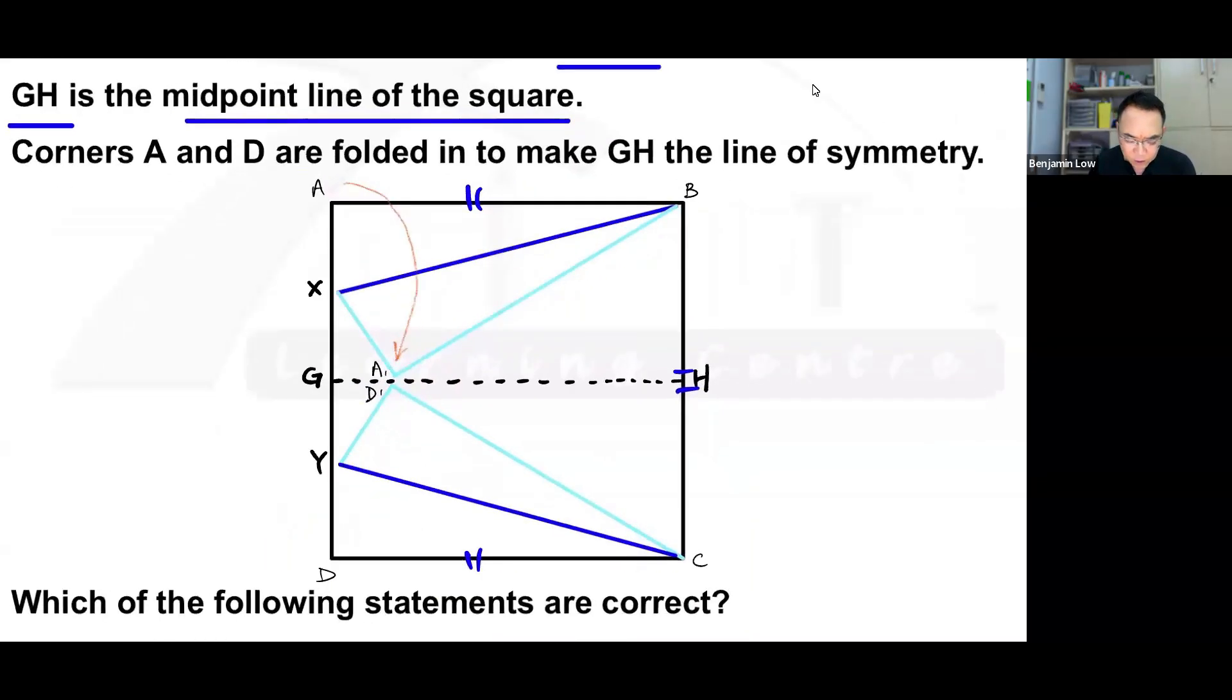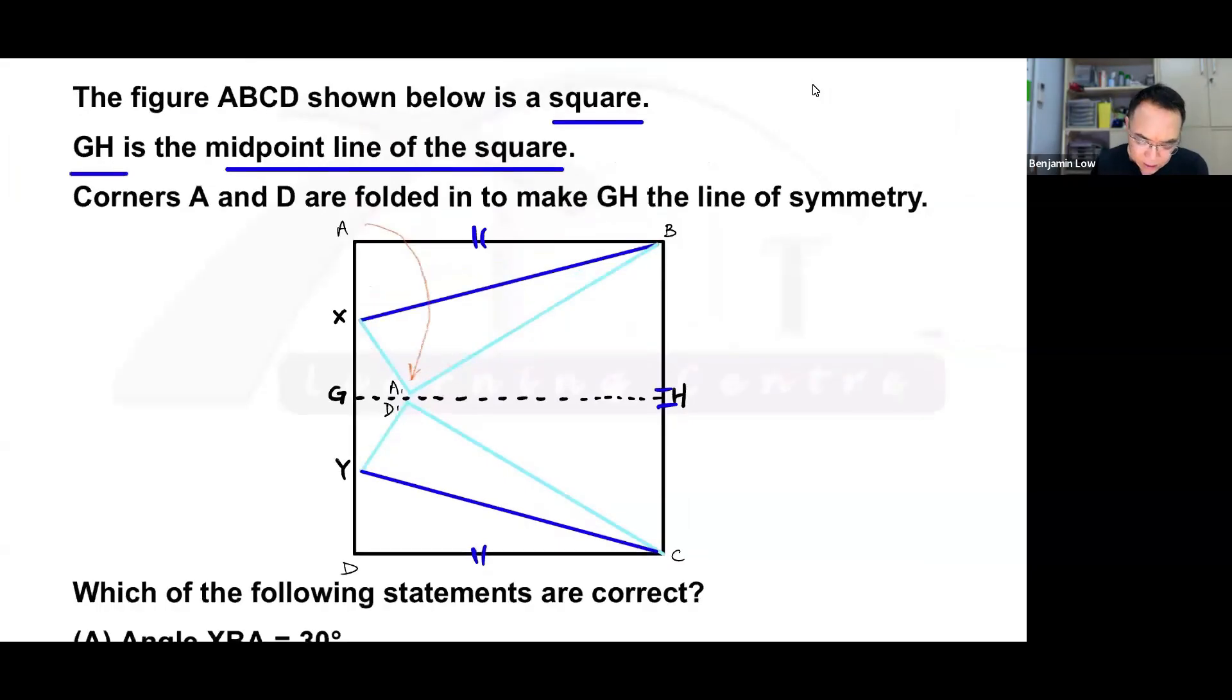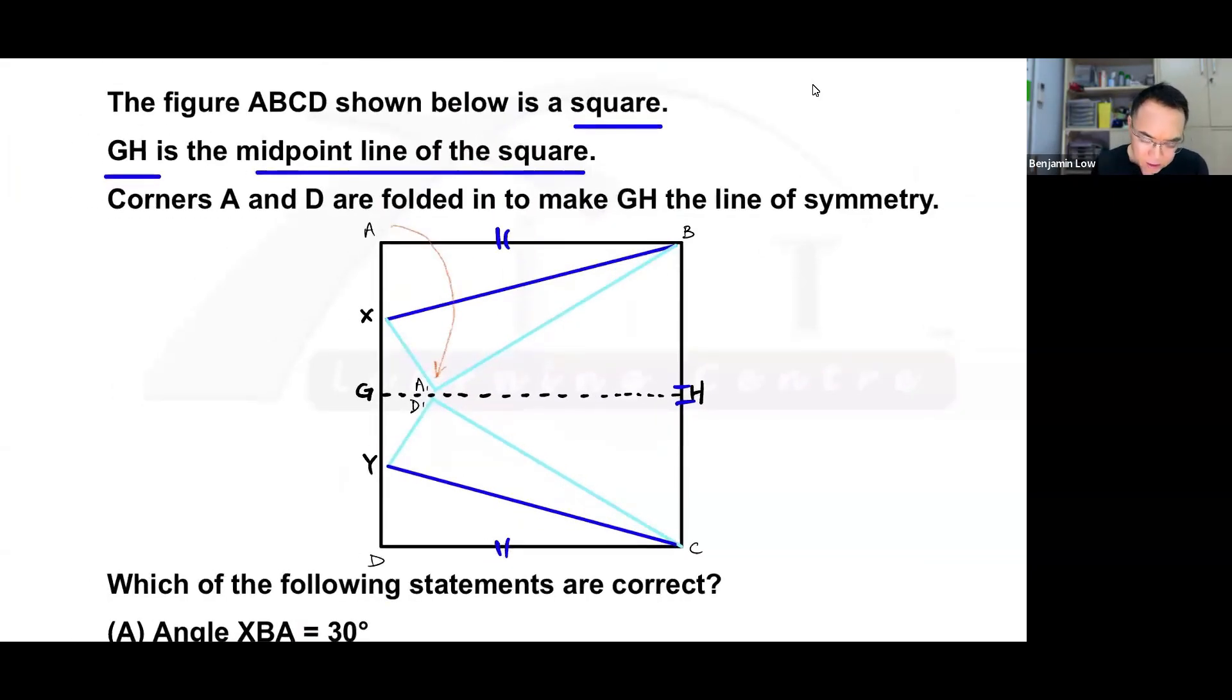Okay, if A is folded in, then this corner is now this corner over here. Alright, so for folded angles, as you are aware, the angles created when folded are equal. I'll go further into that in a short while. Okay, next keyword says that the corners A and D were folded line of symmetry.